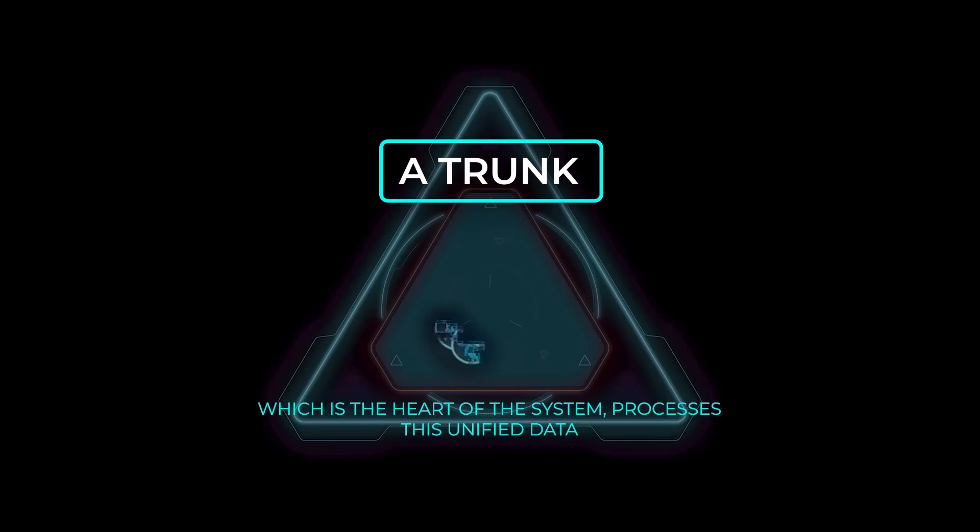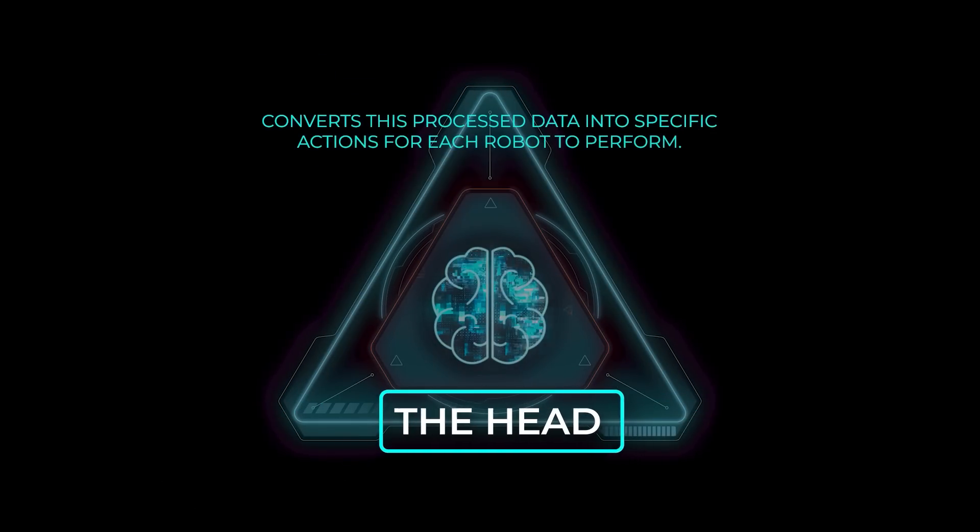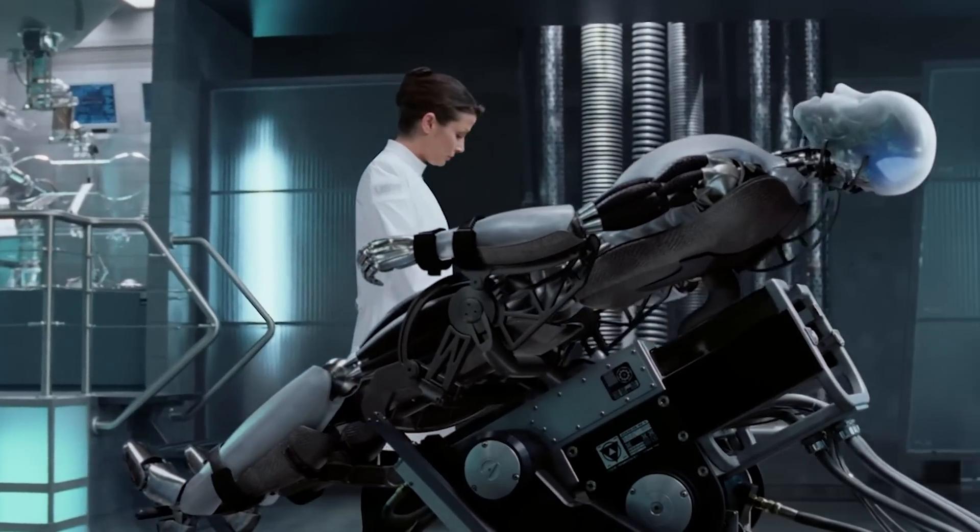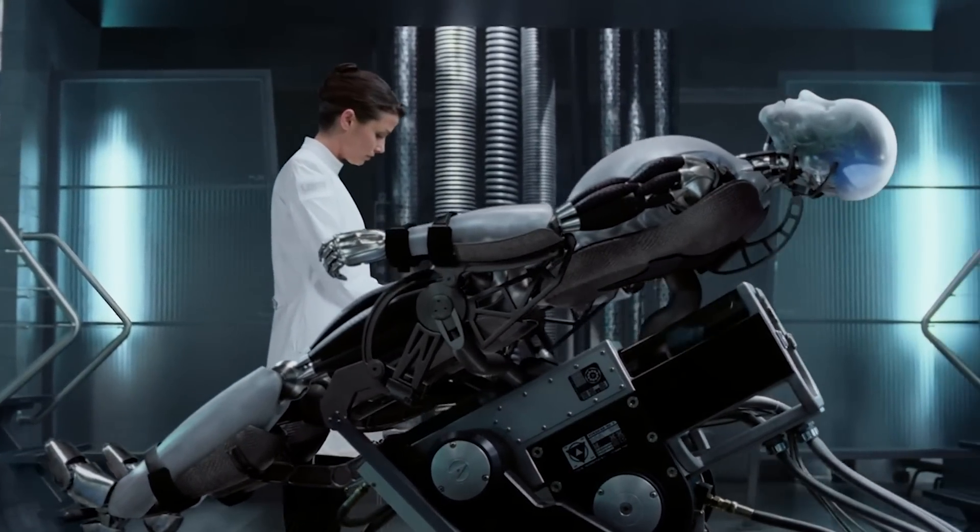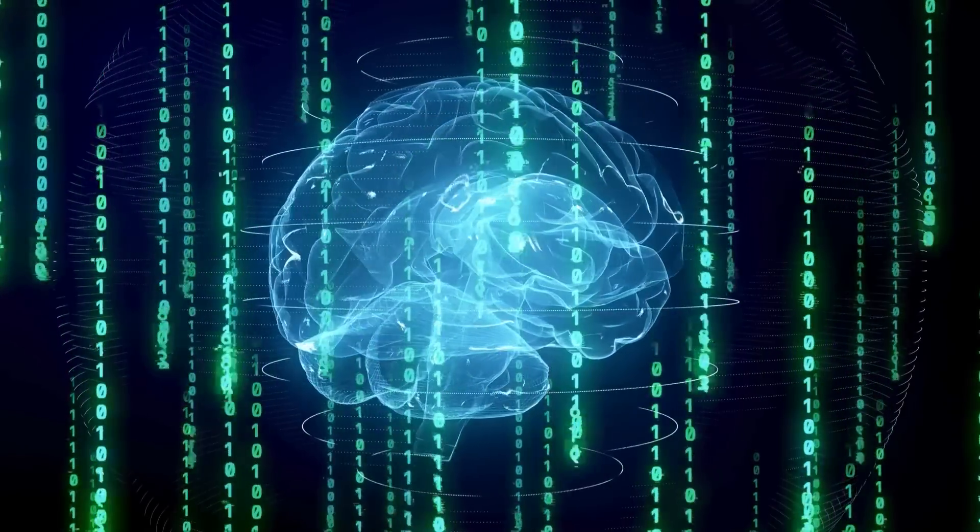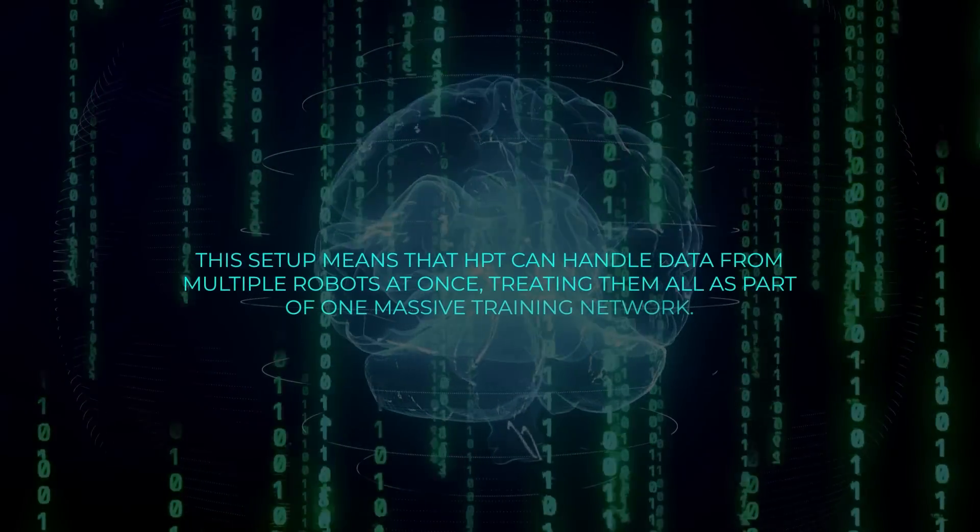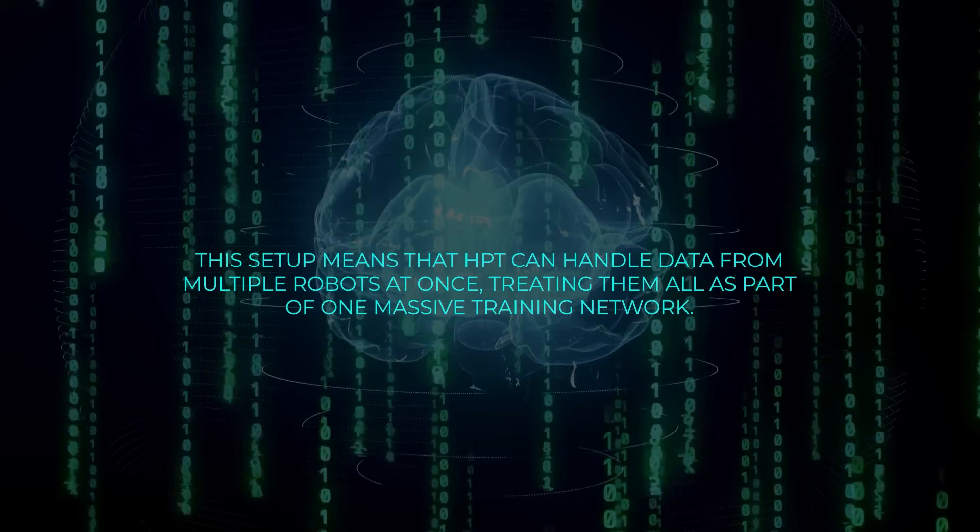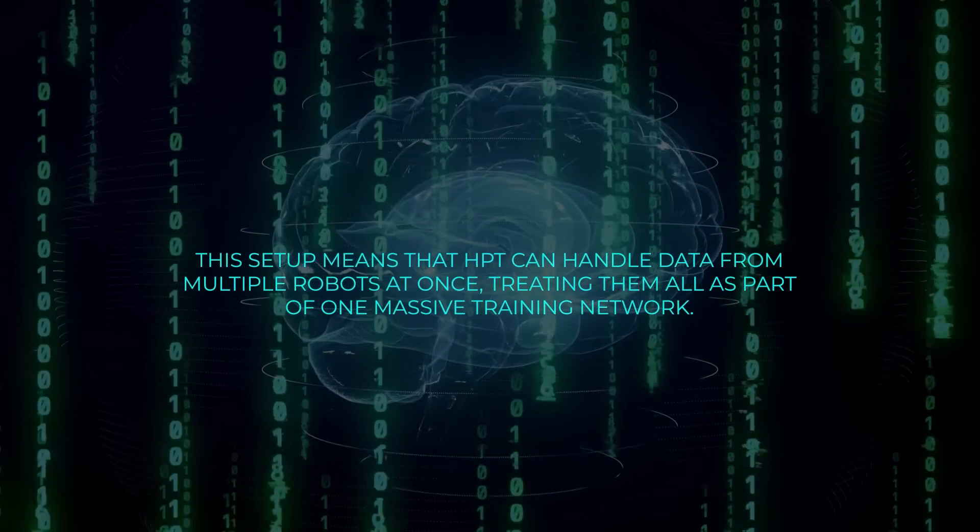The trunk, which is the heart of the system, processes this unified data. And then the head converts this processed data into specific actions for each robot to perform. Each robot just needs its unique stem and head setup, while the trunk remains universal, trained on this huge, diverse dataset. This setup means that HPT can handle data from multiple robots at once, treating them all as part of one massive training network.